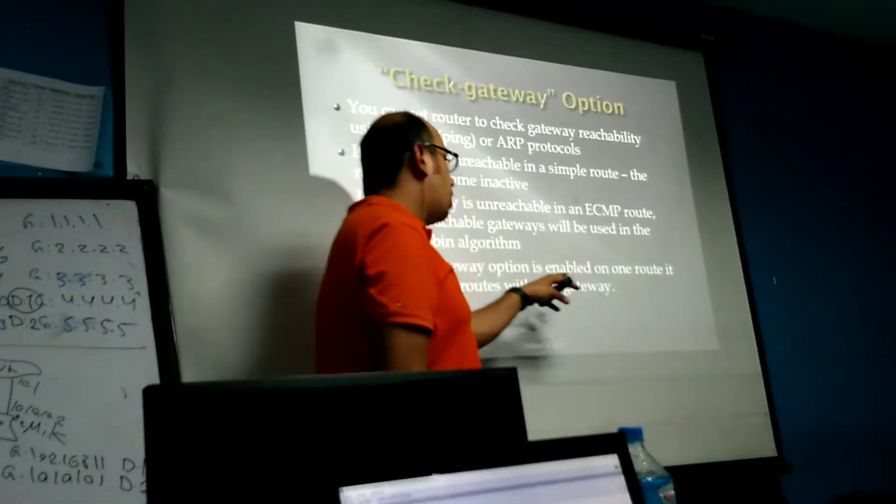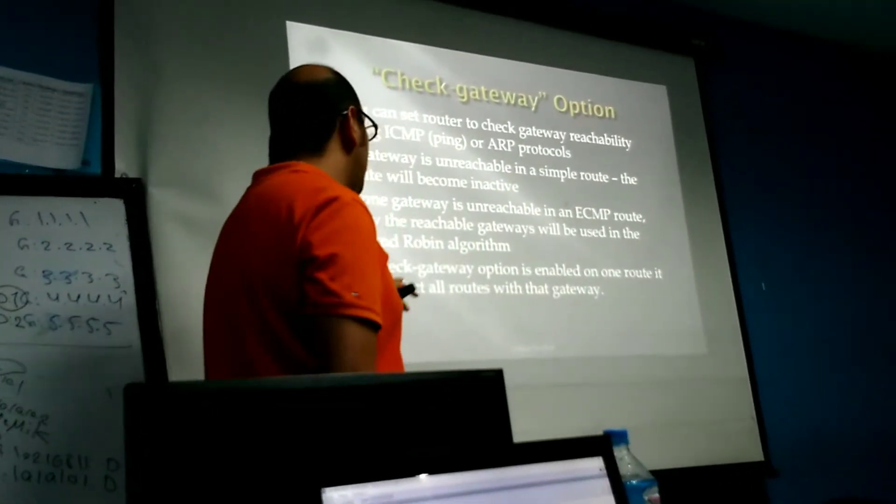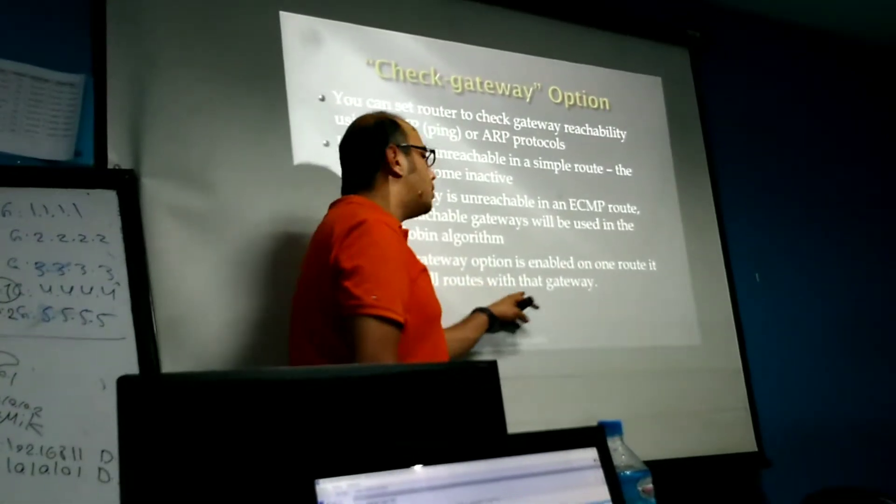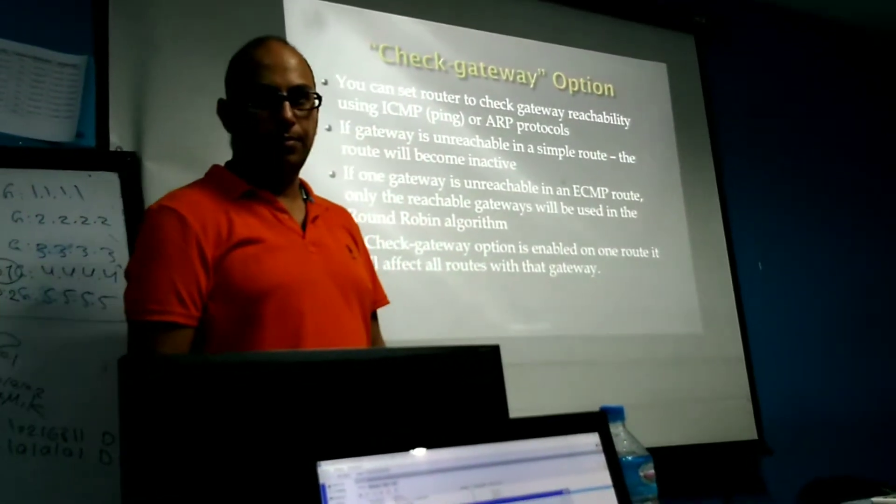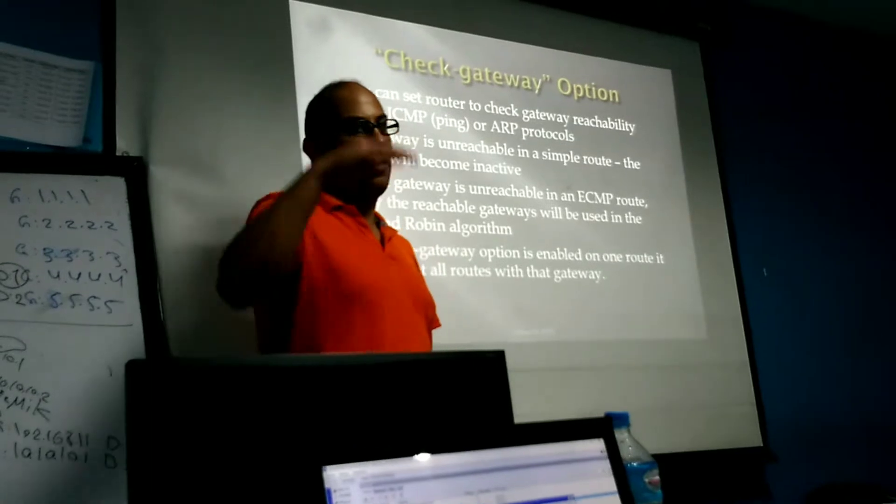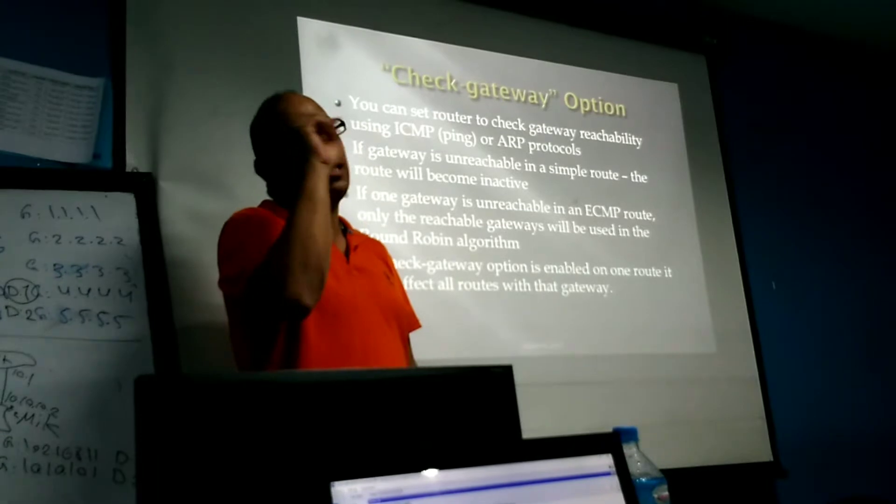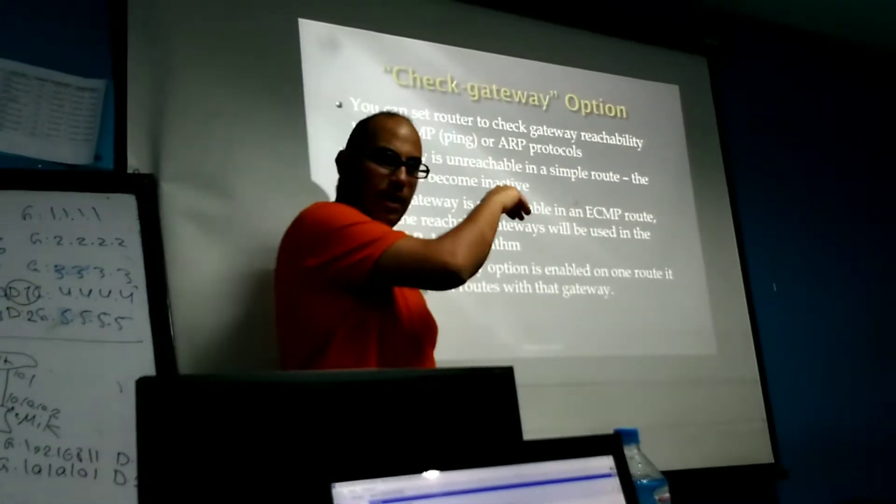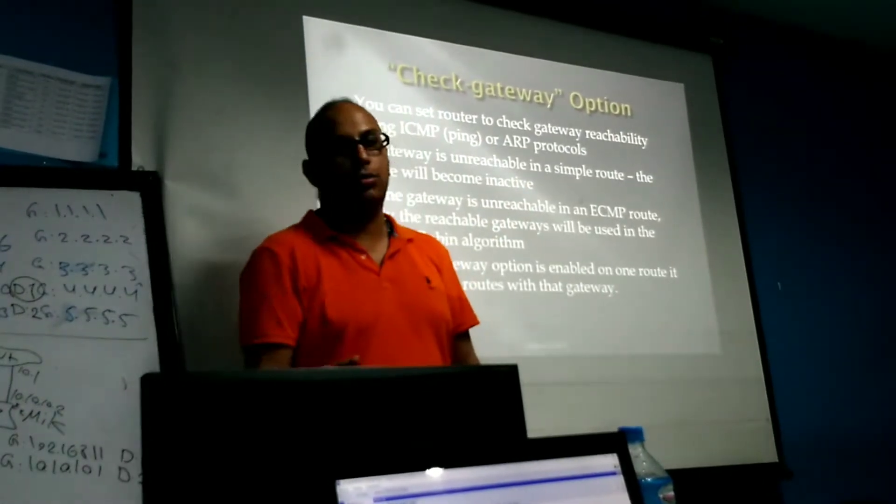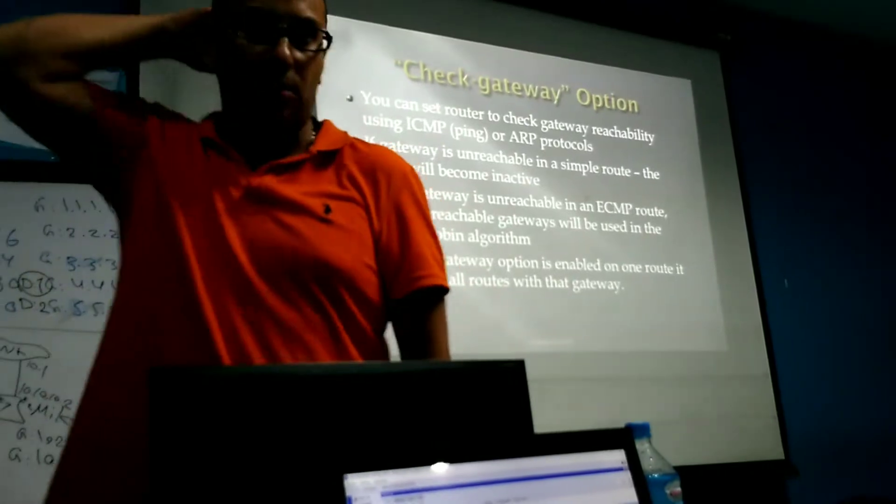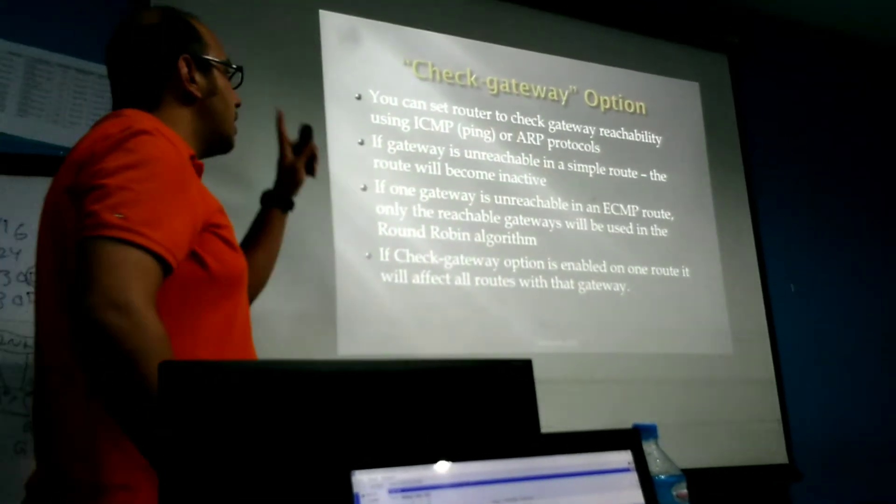If enabled on one route, it will affect all other routes with the same gateway. So if you have your gateway multiple times in multiple routes, if check gateway is enabled in only one of them and the gateway goes down, all those routes come down because check gateway checks only one time.